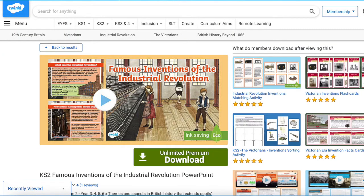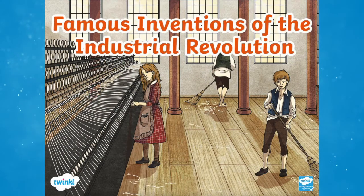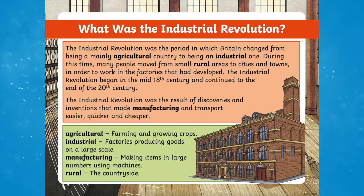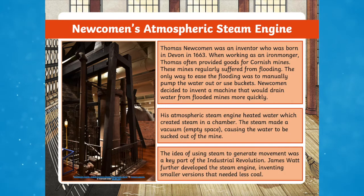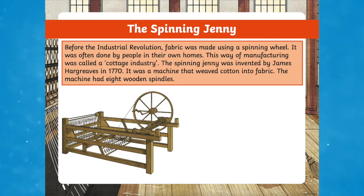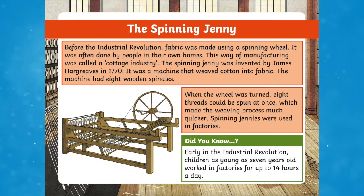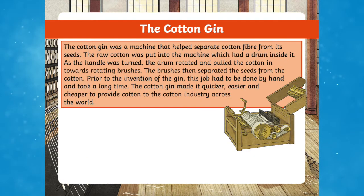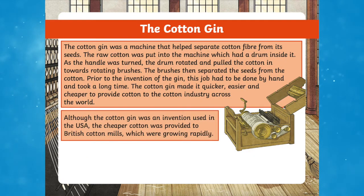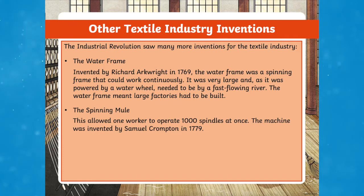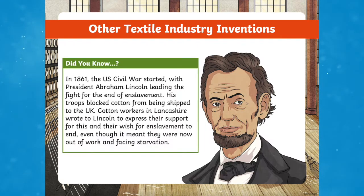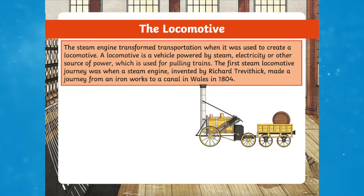We also have this fantastic Key Stage 2 Famous Inventions of the Industrial Revolution PowerPoint. If you're looking for a resource to help teach your Key Stage 2 class all about the many technological advances made during the Industrial Revolution, then our Victorian Inventions Key Stage 2 PowerPoint is just what you need. This engaging and informative PowerPoint is ideal to teach Key Stage 2 children about what the Industrial Revolution was, and presents information about some of the famous inventions during this important period in Britain's history, such as Newcomen's steam engine, the spinning jenny, and the cotton gin.